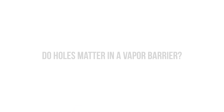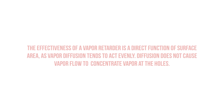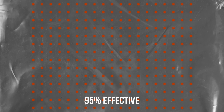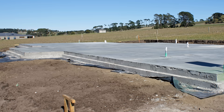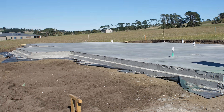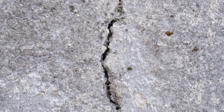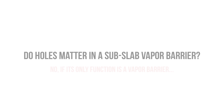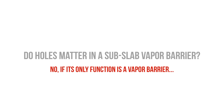This begs the question: do holes really matter in a vapor barrier when it's located sub-slab? Remember, vapor acts evenly. The effectiveness of a vapor retarder is a function of surface area. If we have a bunch of perforations in our vapor barrier — let's say 5% of the total surface area — that vapor barrier is still 95% effective, and the moisture that does pass through is generally inconsequential. So do holes matter in a sub-slab vapor barrier? The answer is no, if it's serving only as a vapor barrier.